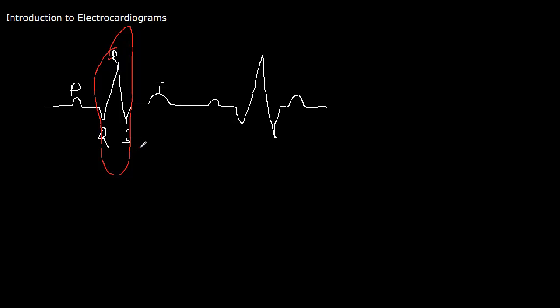It should be around 120 milliseconds, which is equal to three small boxes. So that's a good rule of thumb. If this QRS is wider than three small boxes, then you might have an issue.